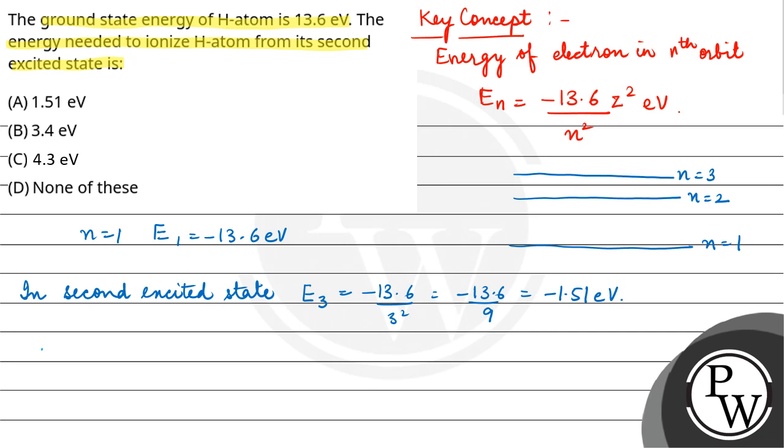So we can say that energy needed to ionize - ionization energy is the energy provided to ionize an atom, to remove an electron from the atom. So energy needed to ionize hydrogen atom...